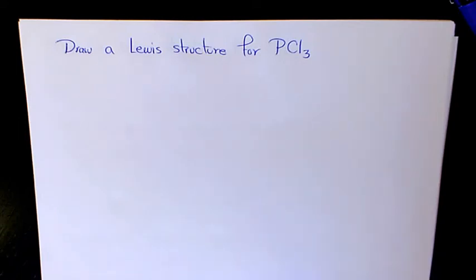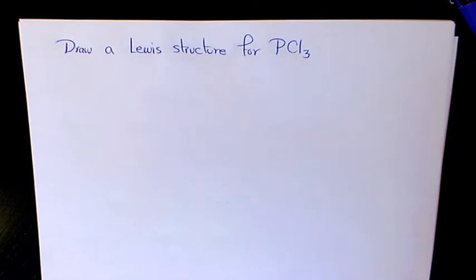What's up guys, this is Massey, welcome to another video. In this video I want to show you how to draw a Lewis structure for PCl₃, phosphorus trichloride. The first thing we need to do is identify the central atom.